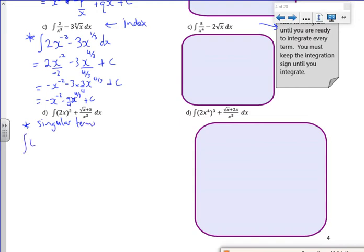So I'm integrating, so I've got 4x squared there. This one I'm going to see as root x over x squared. So that'll be x to the half divided by x squared. So that'll be x to the minus 3 over 2. And then I've got plus 5 over x squared. So that'll be plus 5x to the minus 2.